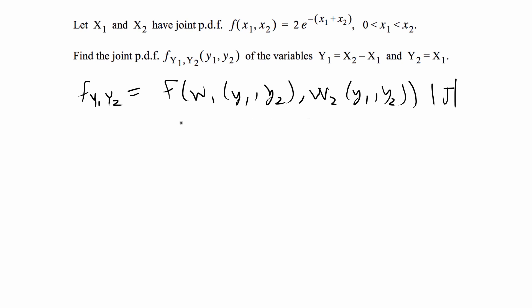This tells you that you do the change of variables, so we're going to solve for x1 and x2 using these equations that we're given. We're going to plug that back into the original function, find new ranges, and multiply this function by the Jacobian, which will give you the joint PDF for y1 and y2.